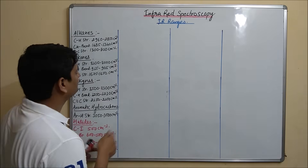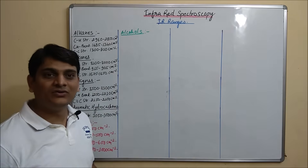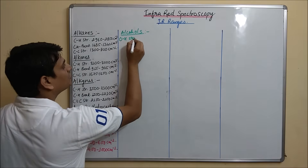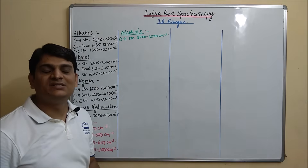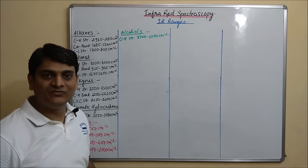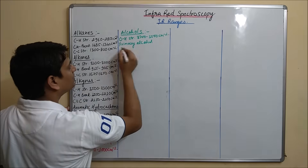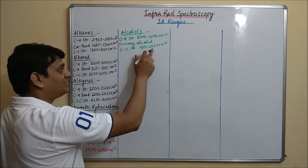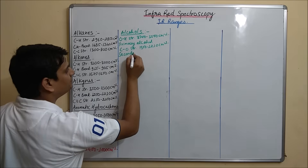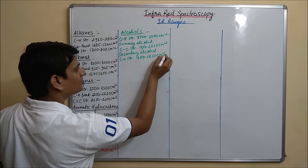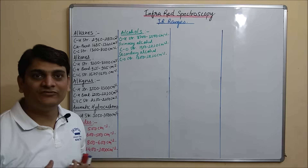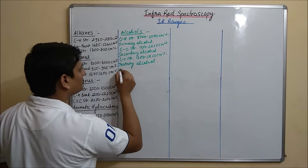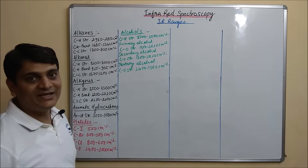Now coming to the next one which is Alcohols. In Alcohol, OH stretching is 3700 to 3500 cm inverse. In primary Alcohol, CO stretching is 1300 to 1050 cm inverse. In secondary Alcohol, CO stretching is 1400 to 1360 cm inverse. So these are the various IR ranges for Alcohols.